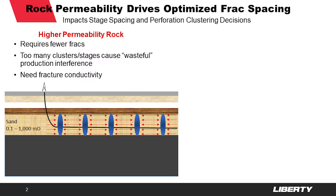Typically we focus in horizontal wells on fewer fracks. Too many perf clusters can actually be wasteful as they create early production interference, and our design typically focuses on creating fracture conductivity.